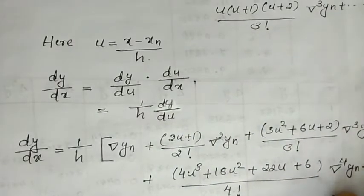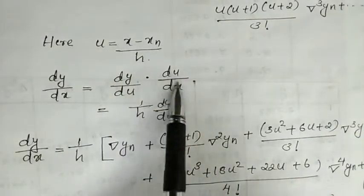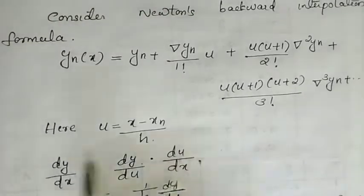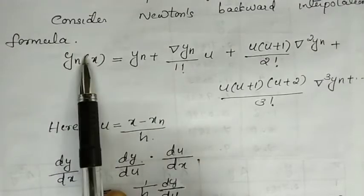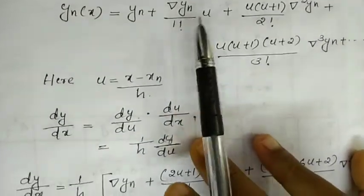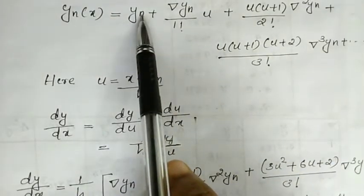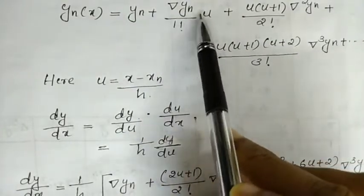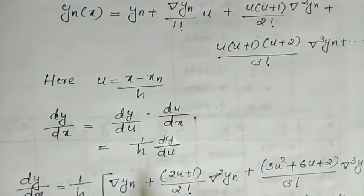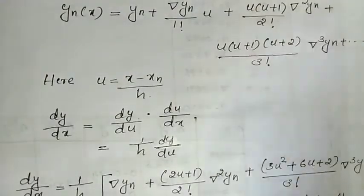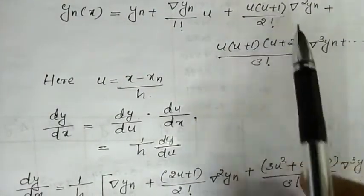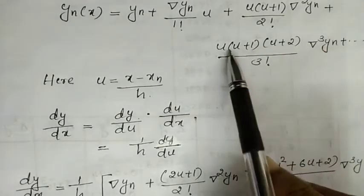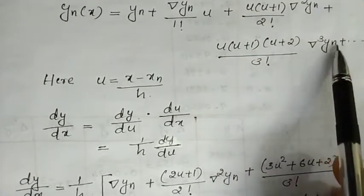Let's take the derivative. That is, 1 by h substitute for du by dx, then differentiate dy by du with respect to u. First term: yn, where u equals 1, cancels. Next: del yn plus u(u+1) — that is u squared plus u — derivative gives 2u plus 1, divided by 2 factorial, times del square yn, plus u(u+1)(u+2) divided by 6 times del cube yn.